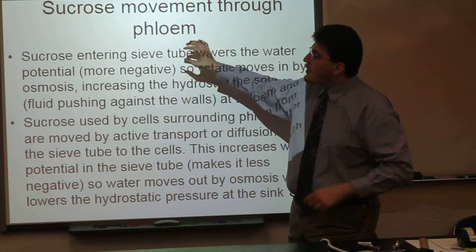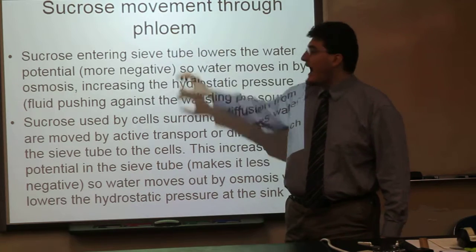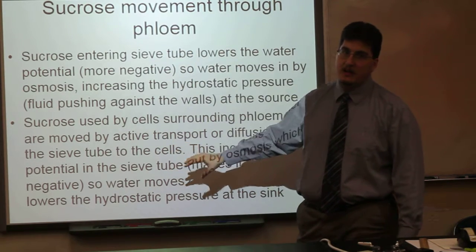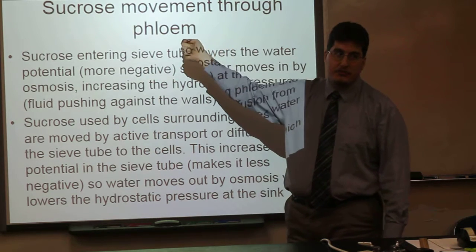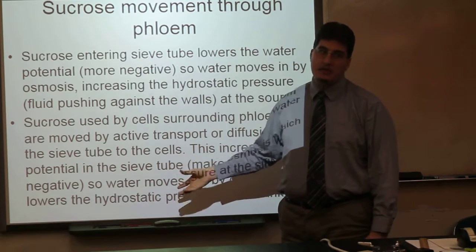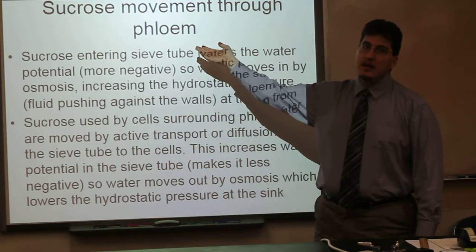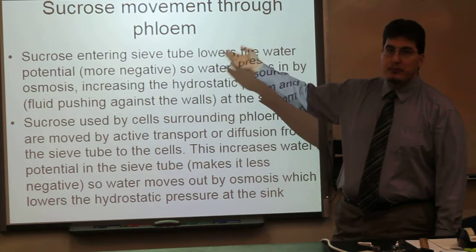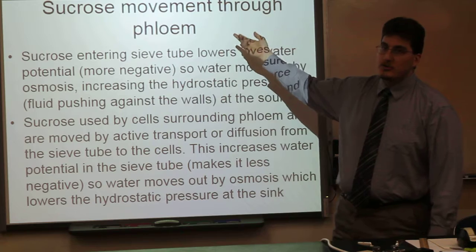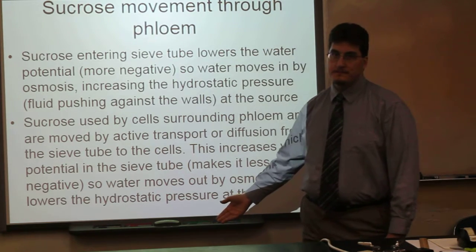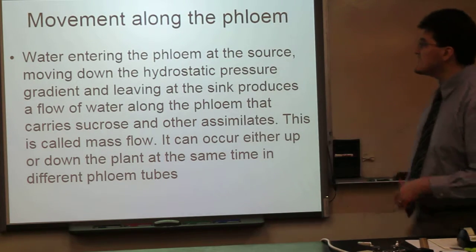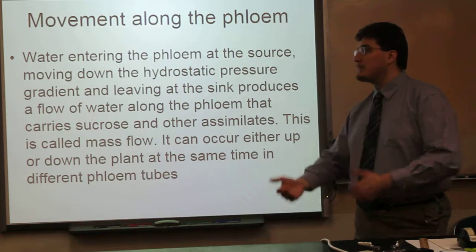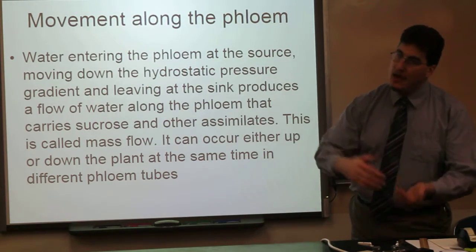Effectively, sucrose is at high concentration at the source and low concentration at the sink. High sucrose draws water in at the source; low sucrose at the sink forces water out. High water increases pressure at the source; low water decreases pressure at the sink. This pressure differential causes water to flow from source to sink. Water entering the phloem at the source moves down this hydrostatic pressure gradient and leaves at the sink, producing a flow of water along the phloem that carries sucrose and other assimilates.